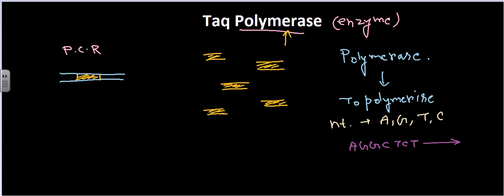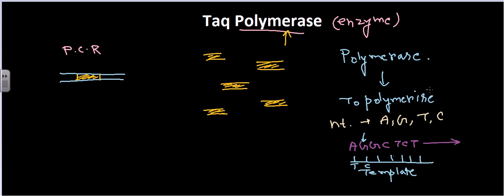This joining happens in a particular direction if we have a template carrying the complementary opposite nucleotide sequence. For example, if the template has T, we put A; if it has C, we put G. We keep on adding and attaching nucleotide sequences in a chain. This process is called polymerization.